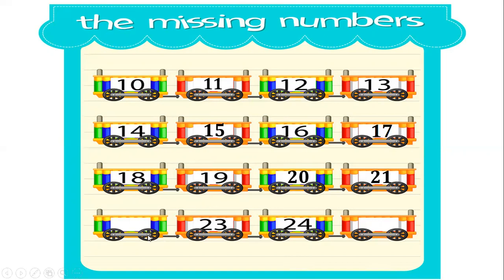Now come to the fourth train. In the first box there is no number. The second box is 23, the third box is 24, and the fourth box has no number — you have to find both. Before 23 what will come? Can anyone say? 22. Then 23, 24, and after 24 what will come? 25.